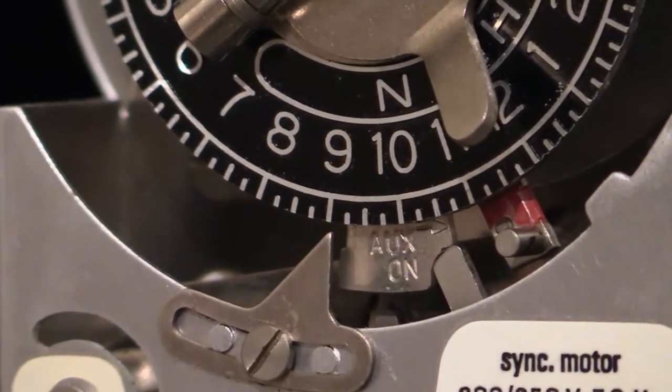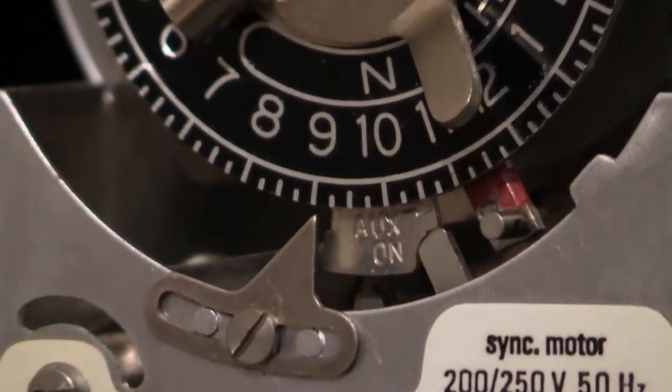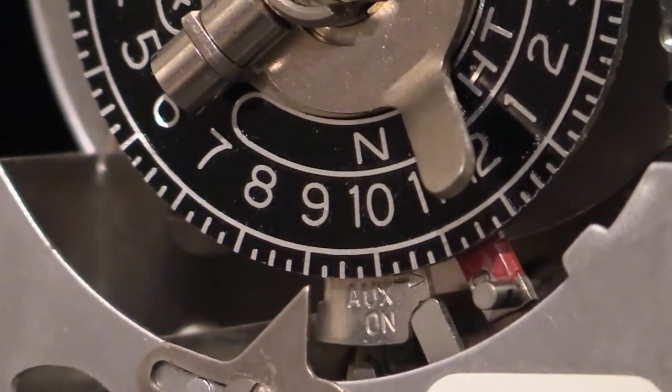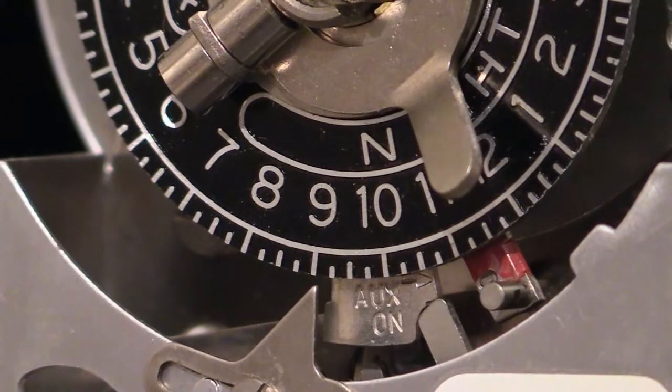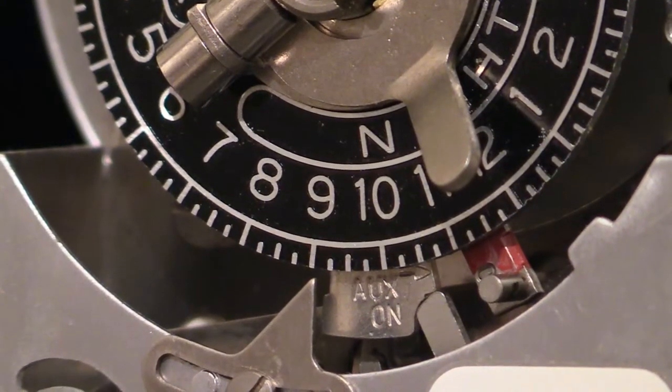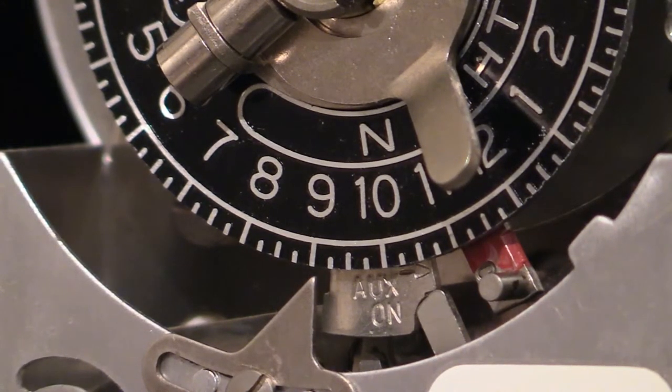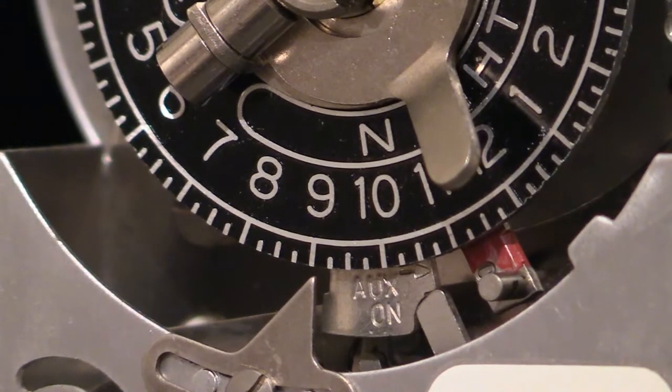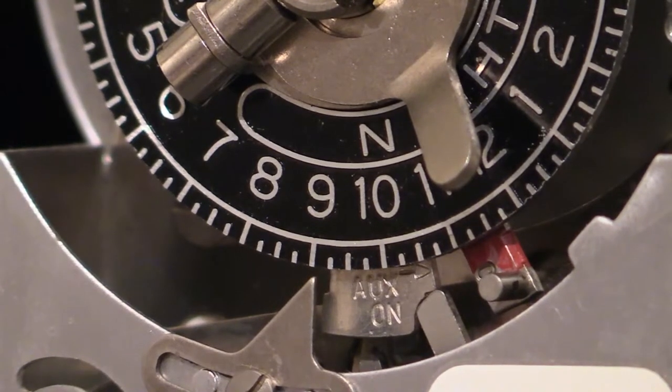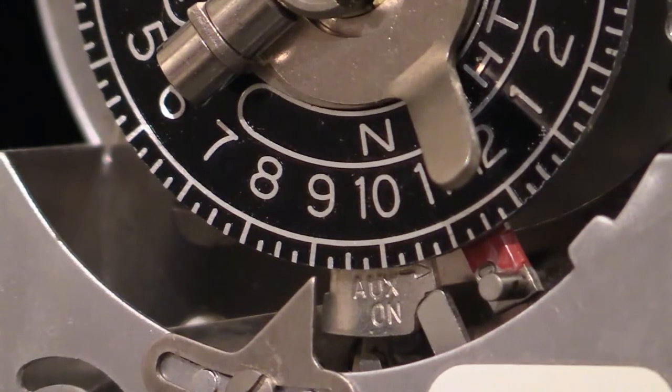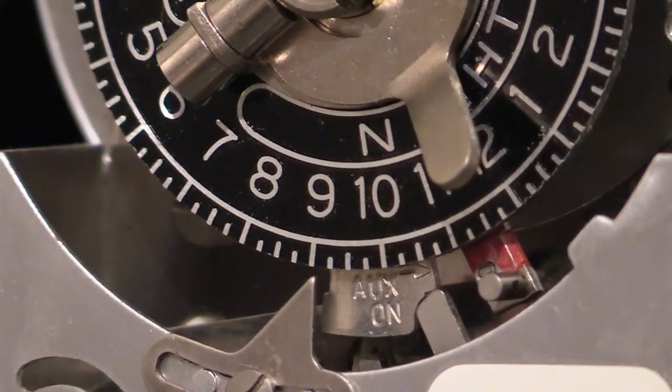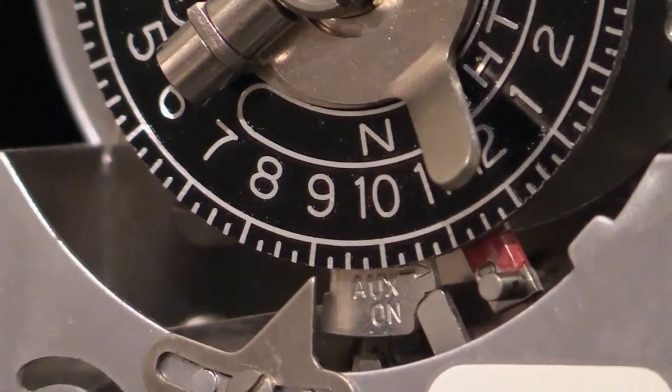You can also see that there is another little tog there and it says AUX ON written on it, and there's a little indent inside that. Now that AUX ON is in reference to that bridge which is up the top. When you set that AUX ON tab to a particular time on that clock face, that then determines when the bridge interacts with that little micro switch.